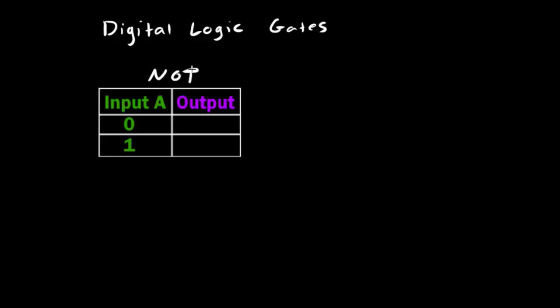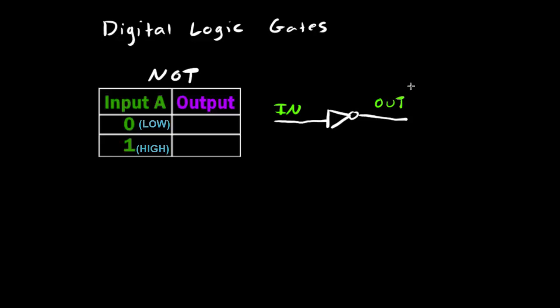We are going to start off by describing the NOT gate. A logic gate basically takes one or more inputs and gives you one or more output values, doing something to the inputs to produce the output. The NOT gate schematic symbol is a triangle with a little circle on the output. It takes a digital value — zero meaning no voltage, one meaning voltage — and if we send in a zero, the NOT gate will give us the opposite: a one.